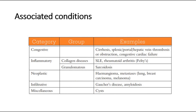Other causes are congestive causes like cirrhosis of the liver, splenic, portal, or hepatic vein thrombosis, and congestive cardiac failure. Inflammatory causes like SLE, rheumatoid arthritis, or granulomatous disease like sarcoidosis. Neoplastic causes like hemangioma and cancer metastasis from other regions. Infiltrative causes like Gaucher's disease and amyloidosis can also cause splenomegaly.